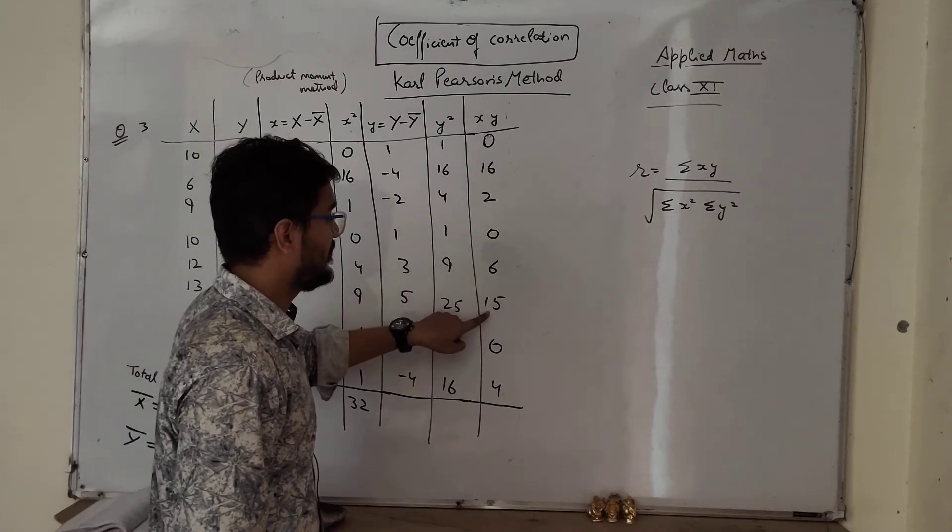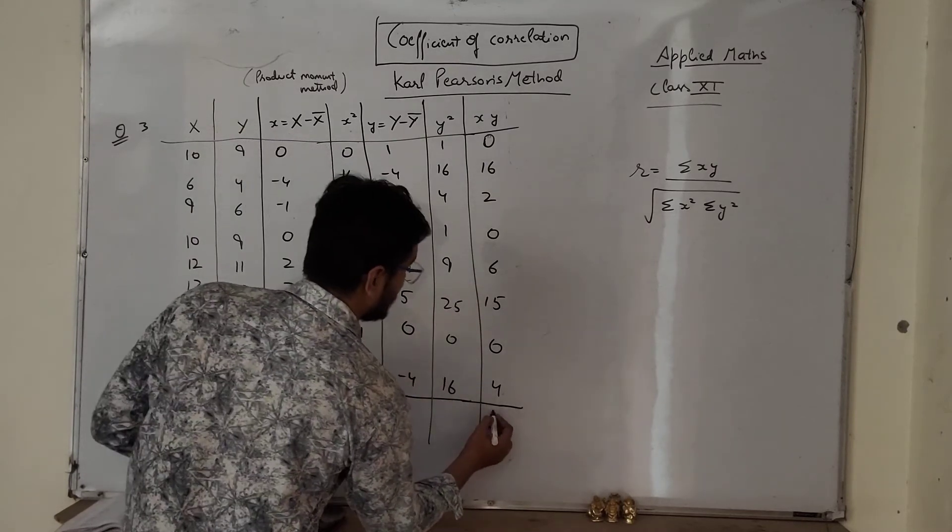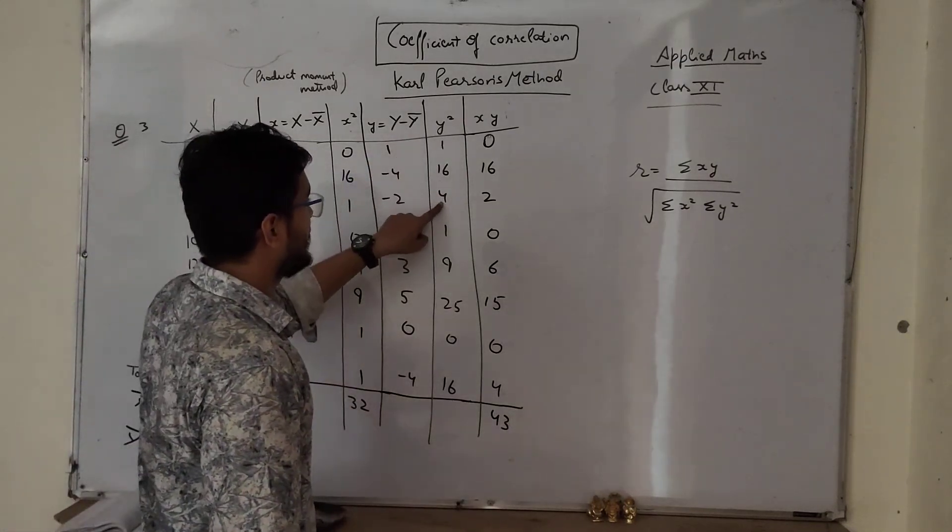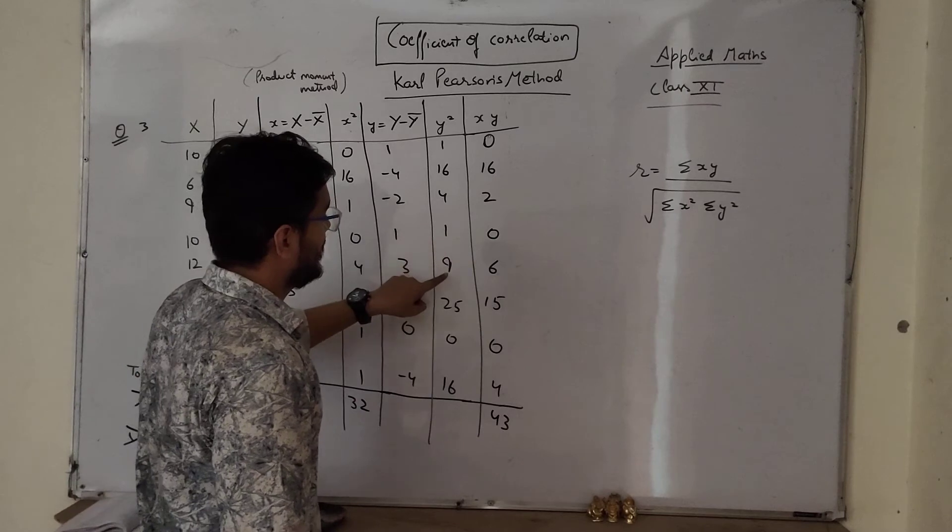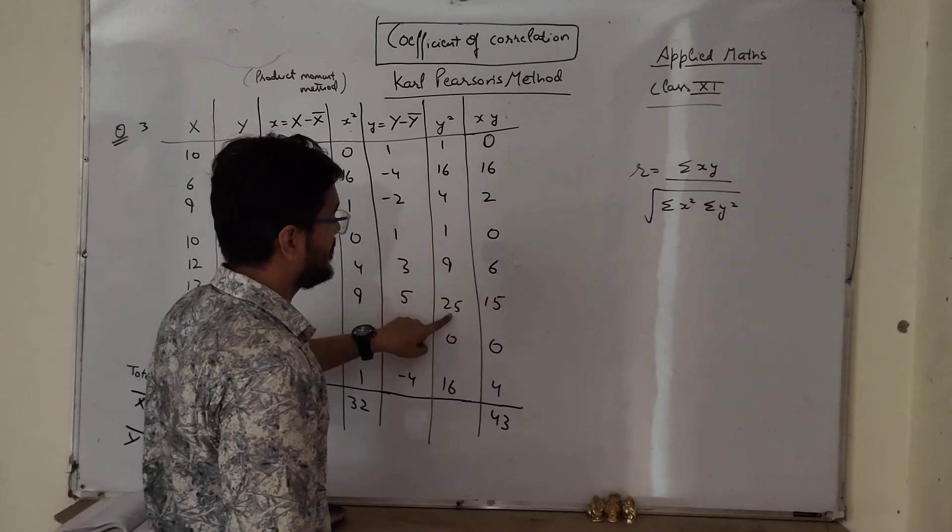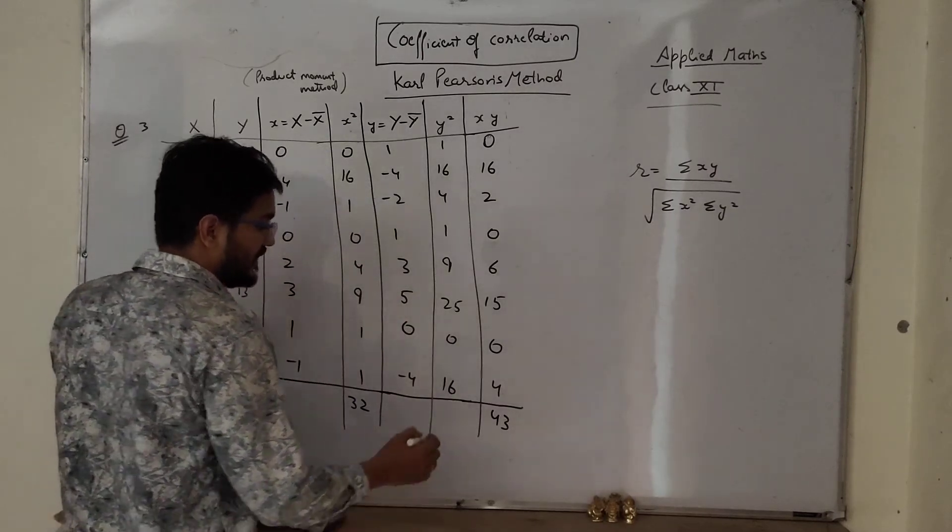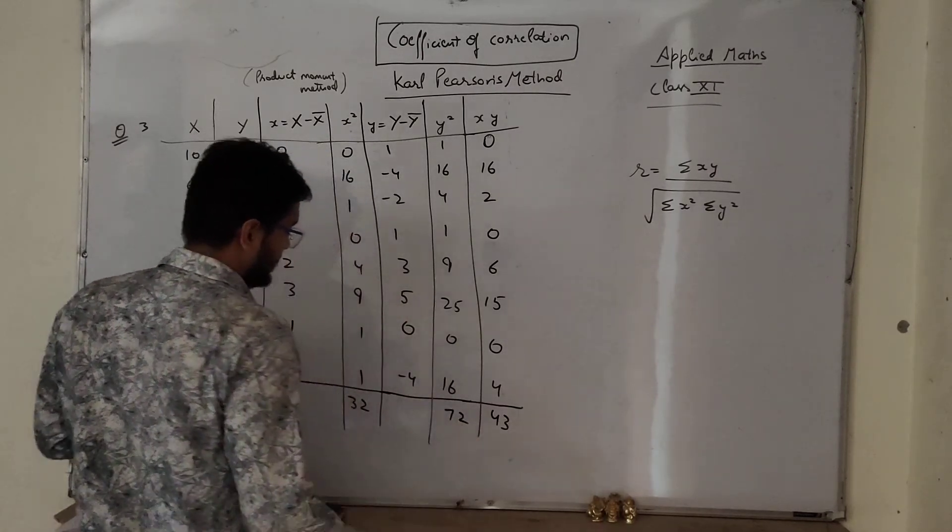So sum of this: 16 plus 18, 18 and 6, 24, 24 and 15, 39, 4, 43. Sum of this: 16, 17, 4, 21, 22, 31, 31 and 25, 56, 56 and 6, 62 and 10, 72.